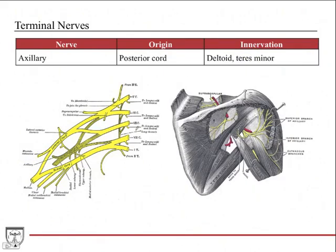The axillary nerve is the smaller of the two nerves coming off the posterior cord — the radial nerve is the larger one, which can help you identify them in a cadaver-based class. The axillary nerve comes through a space called the quadrangular space, along with the posterior circumflex humeral artery. It innervates the deltoid and teres minor, and provides some sensory innervation to the lateral aspect of the arm.